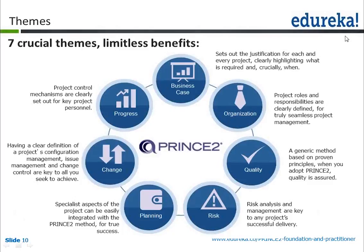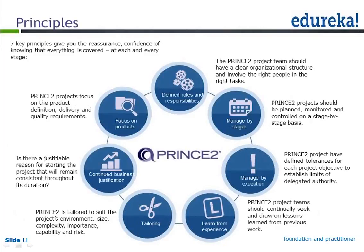The seven key principles of PRINCE2 are: defined roles and responsibilities, managing by stages, managing by exception, learning from experience, tailoring, continued business justification, and focus on products. These principles are non-negotiable — they must all be implemented and utilized during the course of the project, with no exceptions.